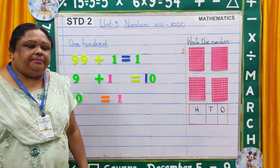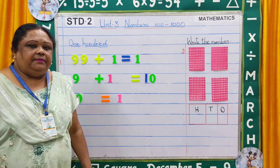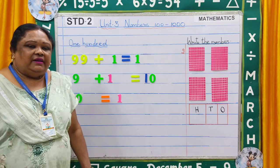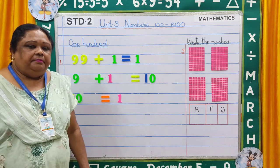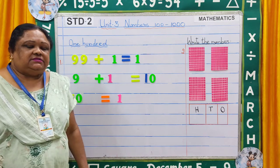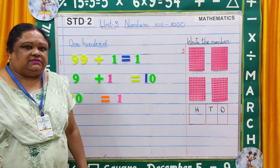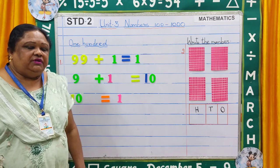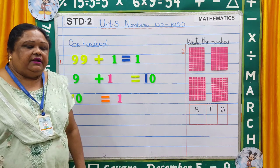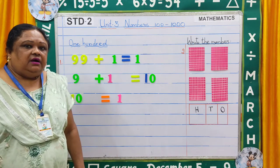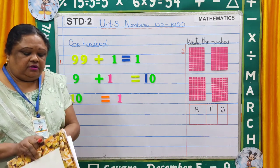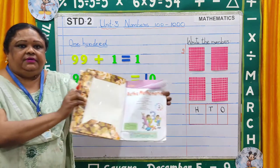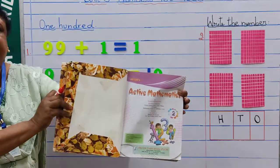Good morning parents and my dear students. Welcome to Standard 2 Mathematics class. Today we are going to do Unit 3, Numbers 100 to 1000, from your Active Mathematics book.